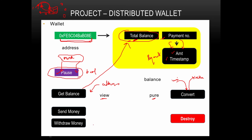Next we have withdrawMoney. This is a function in which any user can withdraw money. withdrawMoney takes the amount the user wants to withdraw, first decrements it from their total balance, and then transfers the money back to the address that called the withdrawMoney function. To keep it simpler, we haven't included payment recording for withdrawals — only payments for incoming money are recorded in the smart contract, not outgoing money. We will extend this in the next classes.